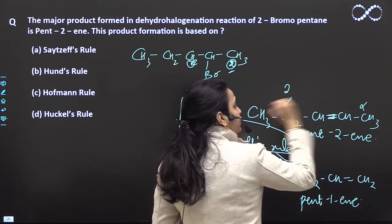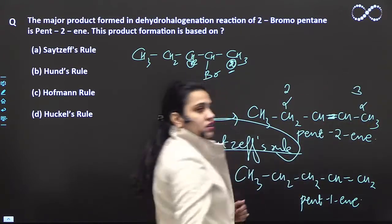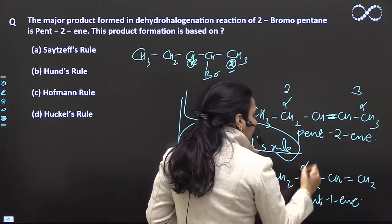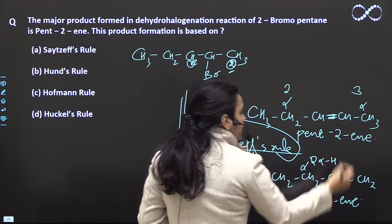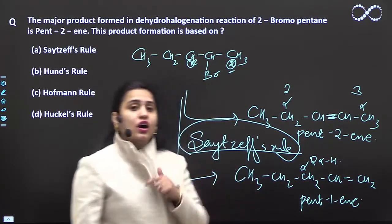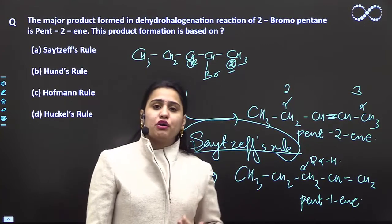How much hydrogen is here? Here are two alpha hydrogens. Here are three alpha hydrogens. Here are three alpha hydrogens. If we see here, there is only one alpha carbon with two alpha hydrogens. So hyperconjugation will be the highest in the first structure, and hyperconjugation increases the stability of alkenes.